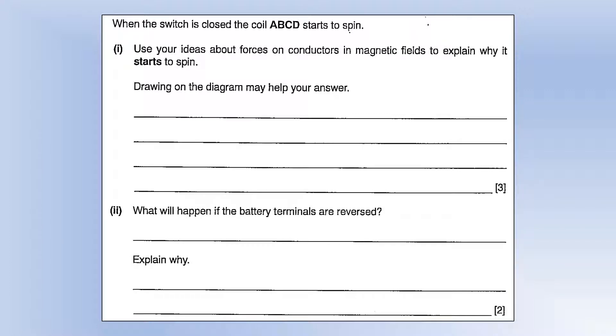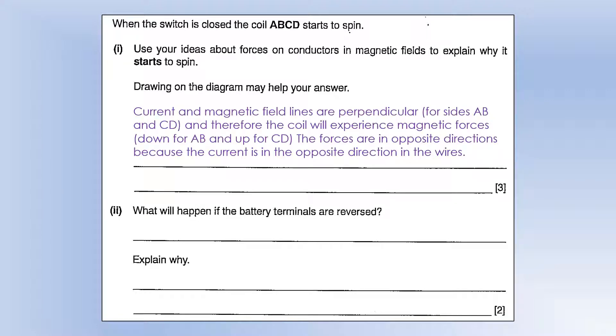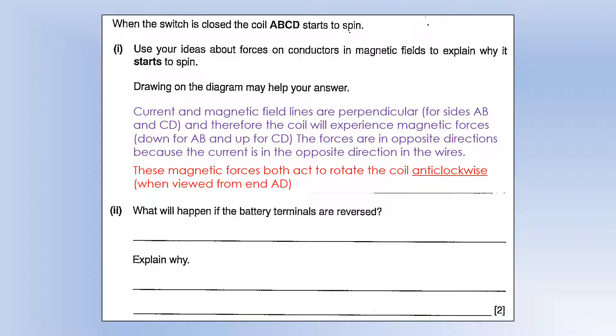Using your ideas about the forces on conductors, explain why it starts to spin. So we've kind of seen that already, but let's put it into words. So current and magnetic field lines are perpendicular. That's true specifically for sides AB and CD. The BC and DA are actually parallel to the field so they don't experience a force. So the coil isn't going to experience magnetic forces down on AB and up for CD. They're in opposite directions because the current is in the opposite direction in each of those wires. So that's why we're going to get the spinning. We've got those magnetic forces both rotating the coil anti-clockwise when viewed from end AD.